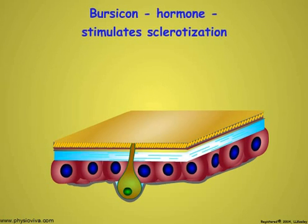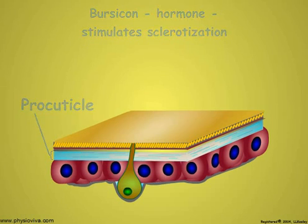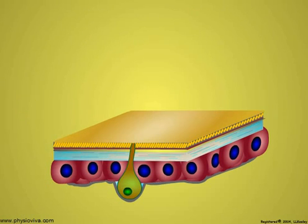A hormone called bursicon is released that stimulates the new procuticular layer that was present at the time of the molt to undertake sclerotization by polyphenols and be converted to the new exocuticle. Once sclerotization is completed, no further sclerotization occurs during the remainder of the instar.